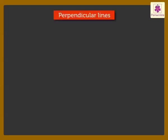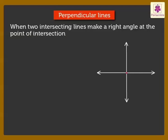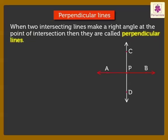Lastly, perpendicular lines. When two intersecting lines make a right angle at the point of intersection, then they are called perpendicular lines. Here line AB and line CD intersect at point P. Here angle APC is equal to 90 degrees, hence these two lines are perpendicular lines.